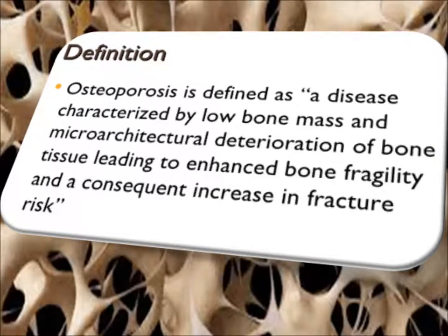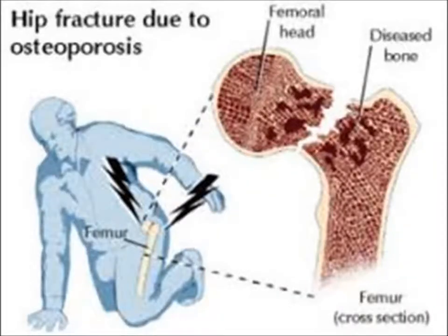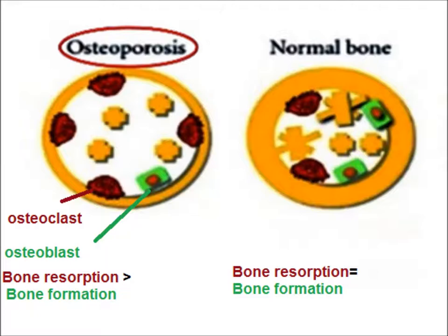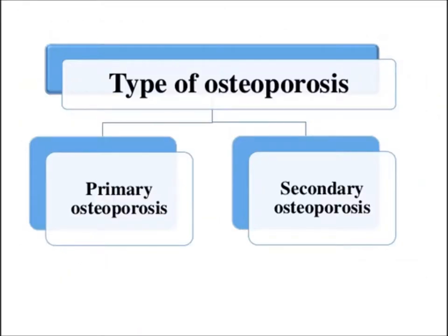A consequent increase in fracture risk is common, usually hip fracture. Due to osteoporosis there is fracture of the neck of the femur, either from trivial trauma or just a fall from the bed. In osteoporosis there is more bone resorption than bone formation, whereas in normal bone, resorption equals formation because it is a dynamic process.